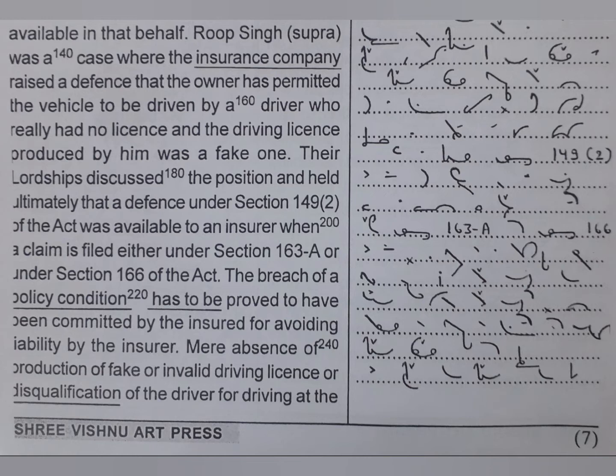Roop Singh Supra was a case where the insurance company raised the defence that the owner had permitted the vehicle to be driven by a driver who really had no licence, and the driving licence produced by him was a fake one. Their lordships discussed the position and held ultimately that a defence under Section 149.2 of the Act was available to an insurer when a claim is filed either under Section 163.3 or under Section 166 of the Act. The breach of a policy condition has to be proved to have been committed by the insured for avoiding liability by the insurer.